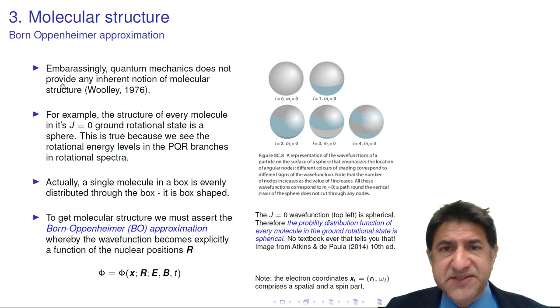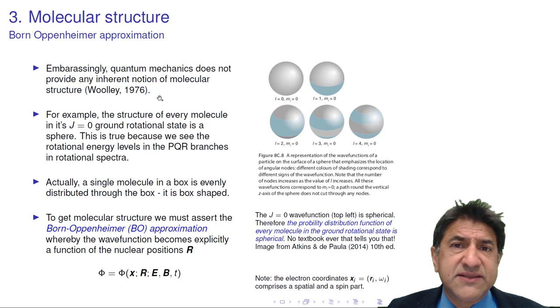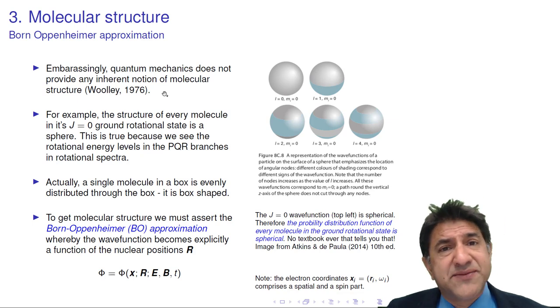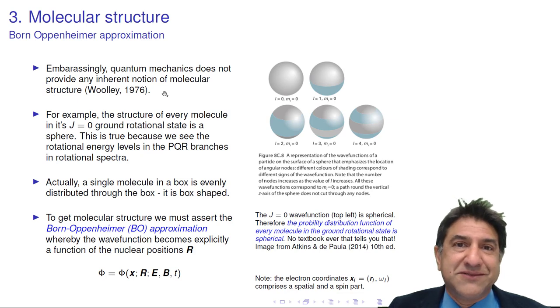Now, as chemists, you may be shocked. You draw a benzene molecule, it has a hexagonal shape, all that kind of stuff. Well, in quantum mechanics, it doesn't. A benzene molecule doesn't have that shape. In fact, all molecules in the gas phase, according to quantum mechanics, are spherical. Now, good luck finding that statement anywhere in a textbook, because it's really embarrassing.